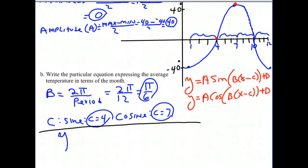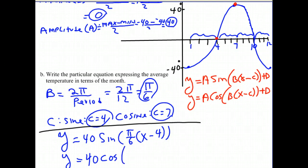We're ready to write our equations. For the sine curve, Y equals 40 sine of pi over 6 times X minus 4. D was 0 because the midline was on the x-axis. For the cosine curve, Y equals 40 cosine of pi over 6 times X minus 7. These are our functions that model the data we were given.